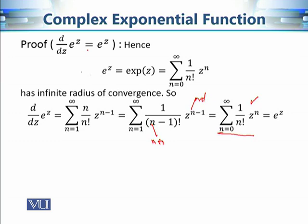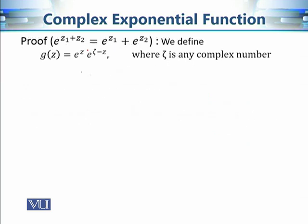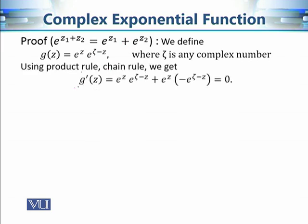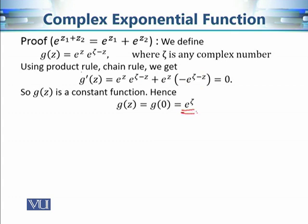That completes the proof of the first property. For the second property, we define g(z) = e^z · e^(ζ−z) where ζ is fixed. To show it is constant, we compute its derivative using the product rule: g′(z) = e^z · e^(ζ−z) − e^z · e^(ζ−z) = 0. Since the derivative is zero, g is constant, and evaluating at z = 0 gives g(z) = e^ζ.